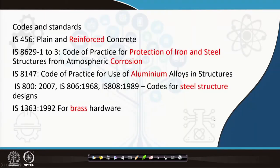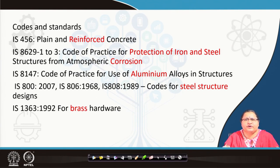Coming to codes and standards: for plain and reinforced cement concrete we refer to IS 456; for corrosion protection of iron and steel from corrosion we refer to IS 8629. There are also codes for aluminum, steel structure design, and brass as a hardware material. This was today's introductory lecture and we will move on to ferrous metals in the next lecture of this module. Thank you.